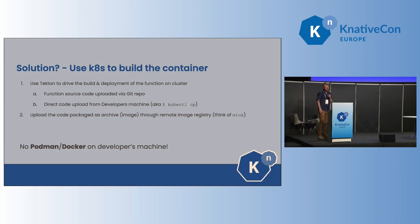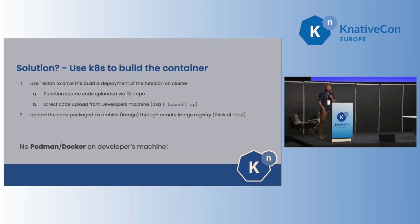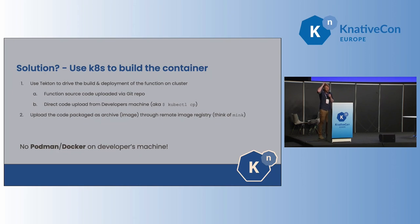There is obviously a problem of how to get the source code from the developer's machine onto the cluster. We have multiple options. The first obvious option is that we can push the source code to some Git repository and then just fetch the Git repo onto the cluster via Tekton and then execute build and deployment. The second option could be to directly upload the source code from the developer's machine to the cluster. This might be beneficial when we are developing the function and would like to iterate fast, so we don't want to go through the Git repo.